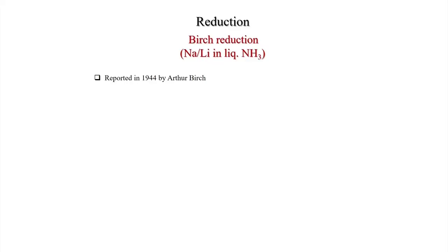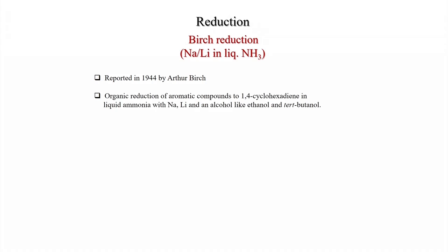Birch reduction uses sodium or lithium metal in liquid ammonia. It was reported in 1944 by Arthur Birch, which is why it is called Birch reduction. It is the organic reduction of aromatic compounds to 1,4-cyclohexadiene in liquid ammonia with sodium or lithium and an alcohol like ethanol or tert-butanol, which serve as the proton source.